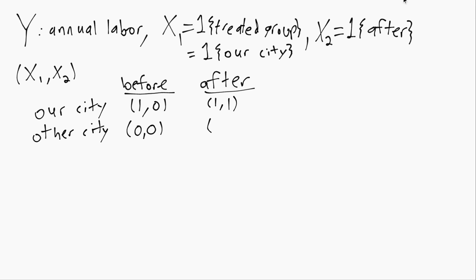And then down here, finally, again, X1 will be 0 because they're not in our city. But X2 does equal 1 because we're in the after period.